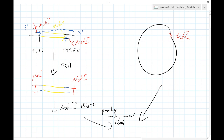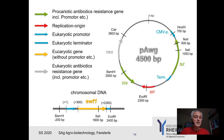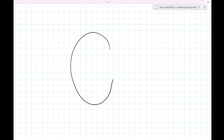What we have achieved is we amplified the chromosomal EWF1 gene by designing primers at position plus 300 and plus 2300, adding NotI sites; we cut, purified the fragments, did the same cutting of the plasmid at NotI, and put them together. We have formed our product — this vector can be called pAWG-EWF1. Now let's have a look at how our final vector looks. We have the vector backbone with the CMV promoter and the terminator.